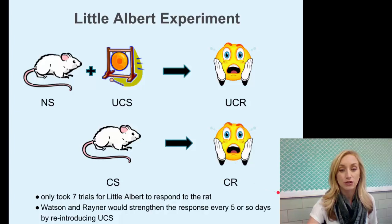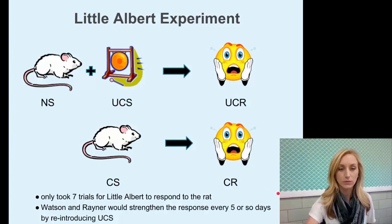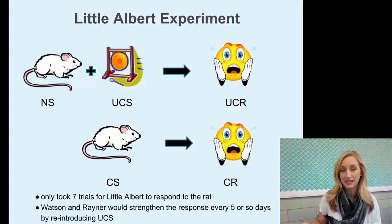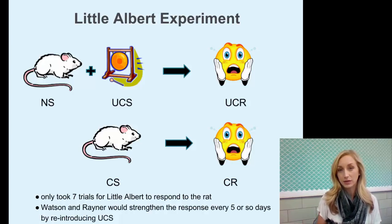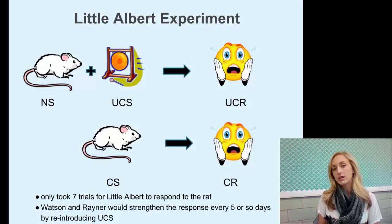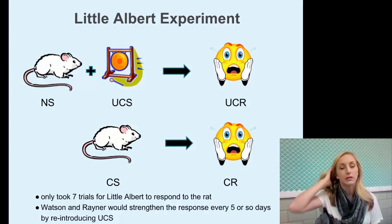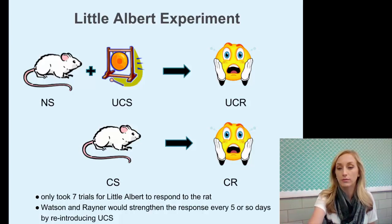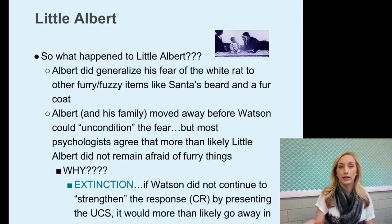It only took seven trials for Little Albert to respond to the rat. Watson and Rayner would strengthen the response every five or so days by reintroducing the unconditioned stimulus of the loud noise, thereby strengthening that response and allowing extinction to not occur — essentially avoiding extinction.